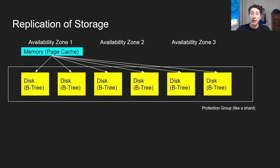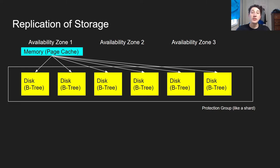Another nice thing about this is that disk and memory can be replicated and scaled independently. For storage replication, we have a memory or database cache server, and something called a protection group. In Aurora, a protection group is a group of six disk servers comprising three availability zones — meaning different data centers. This ensures that if one availability zone goes down, you still have replicated data on the other two. Now let's look at how writes actually work, because they're pretty interesting in this system.